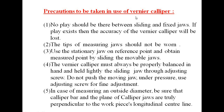Precautions for vernier caliper use: No play should exist between the sliding and fixed jaws, as it will reduce accuracy. The tips of measuring jaws should not be worn. Use the stationary jaw as a reference point and obtain the measured point by sliding the movable jaw. The vernier caliper must be properly balanced in hand. Apply only gentle hand pressure — do not push the moving jaw under pressure. Use the adjusting screw for fine adjustment. When measuring an outside diameter, ensure the caliper bar and plane of the caliper jaws are truly perpendicular to the longitudinal axis of the workpiece.